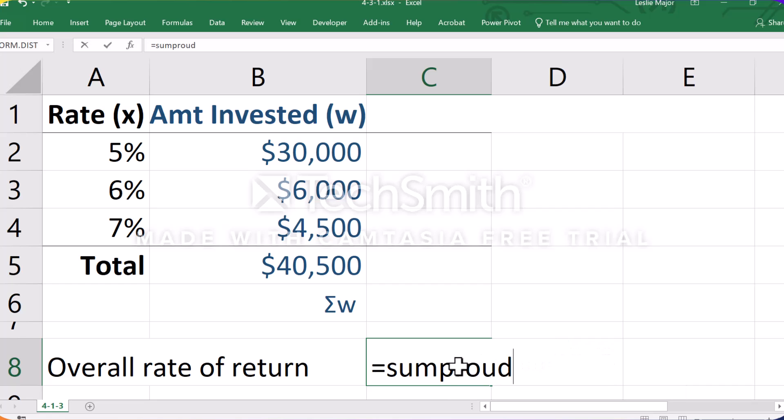Equal SUMPRODUCT of your rates with your amounts. And that will do exactly what we did. That will multiply the 5% with the $30,000, 6% with the $6,000, 7% with the $4,500, and then just divide that by the total of the amounts invested, or the total of the weights.